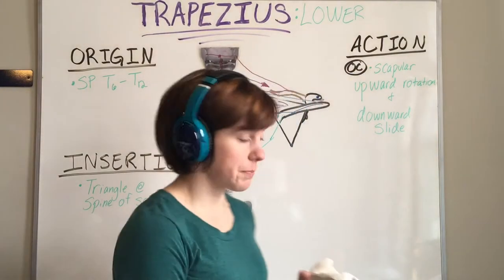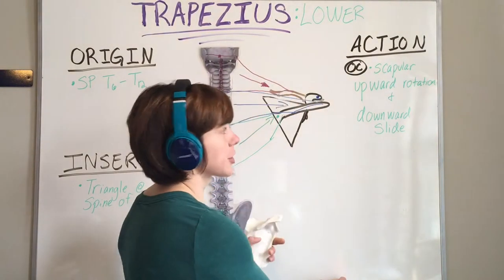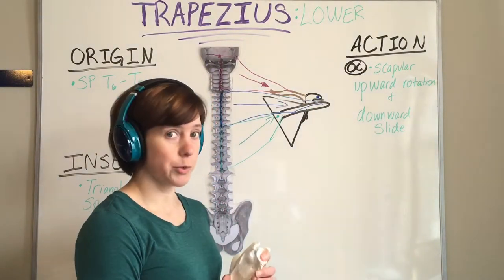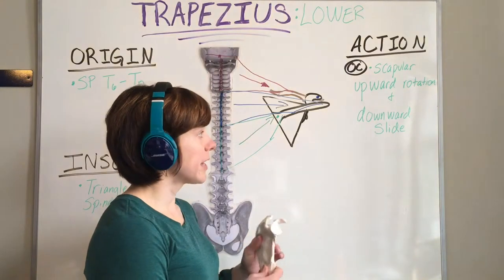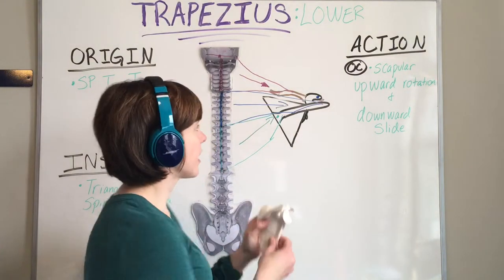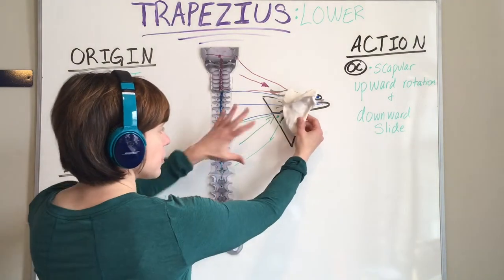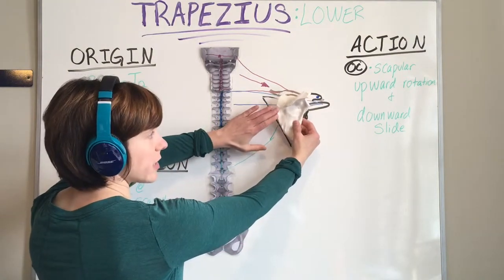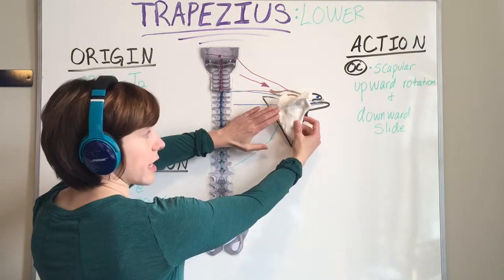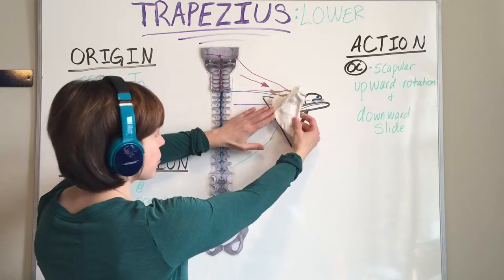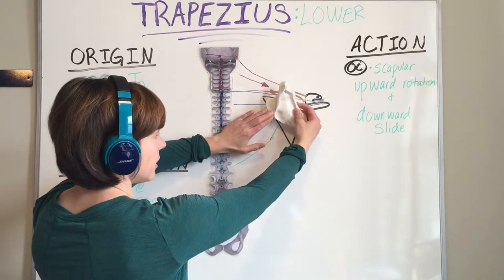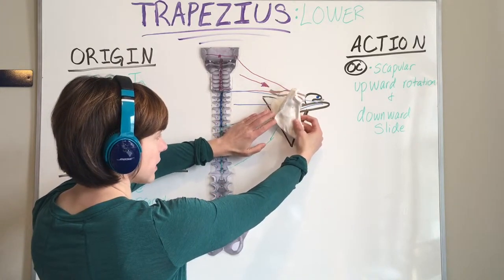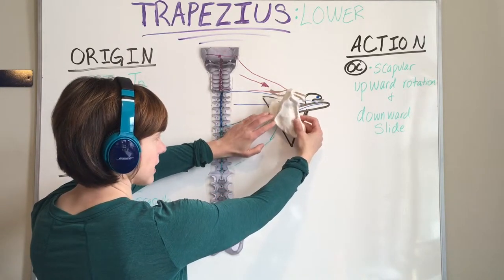The lower trapezius has the action of scapular upward rotation and downward slide. So pulling from down here, the scapula will upwardly rotate and kind of complete a downward slide.